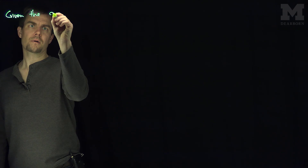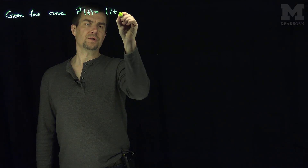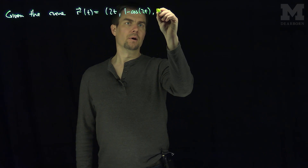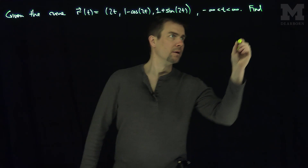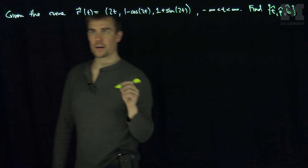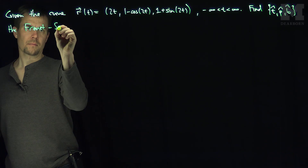Hello students. In this video, we'll see an example of finding the Frenet-Serret frame of a curve. Given the curve R of t, which is (2t, 1 − cos(2t), 1 + sin(2t)), for t between negative infinity and infinity, let's find T-hat, P-hat, and B-hat — the Frenet-Serret frame.